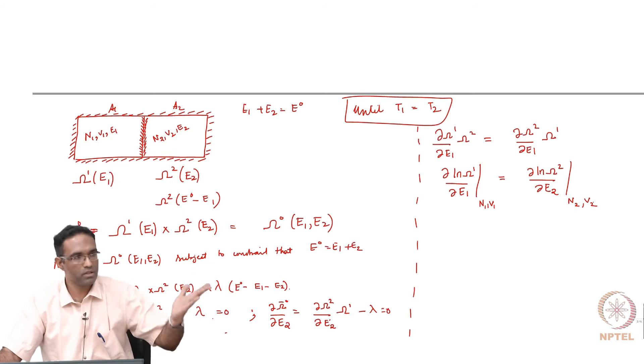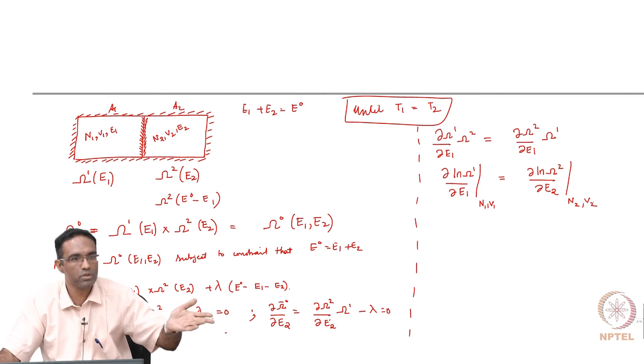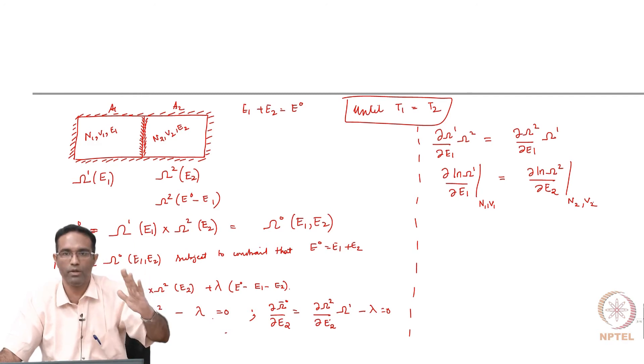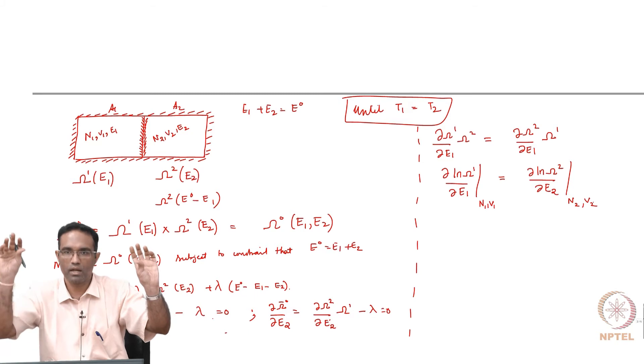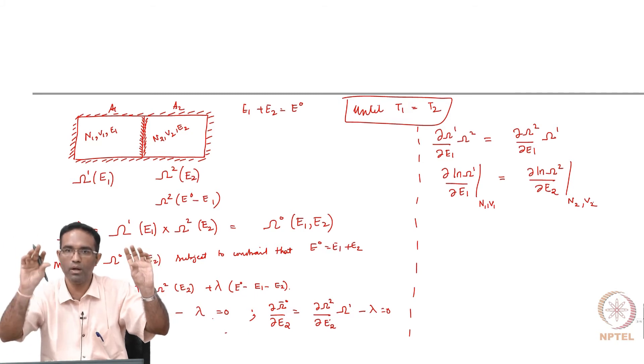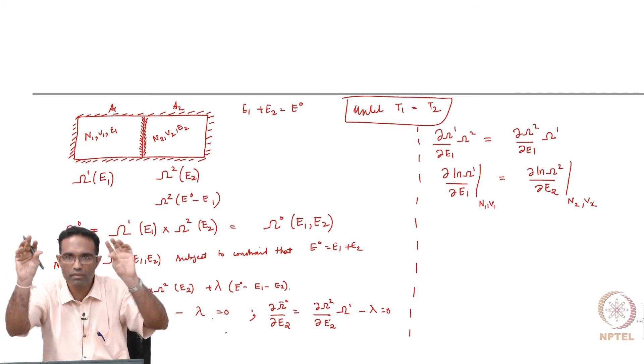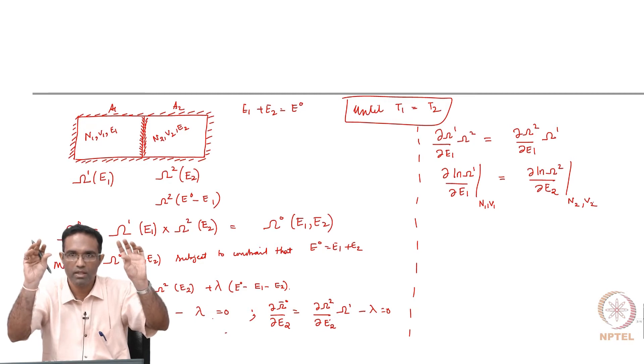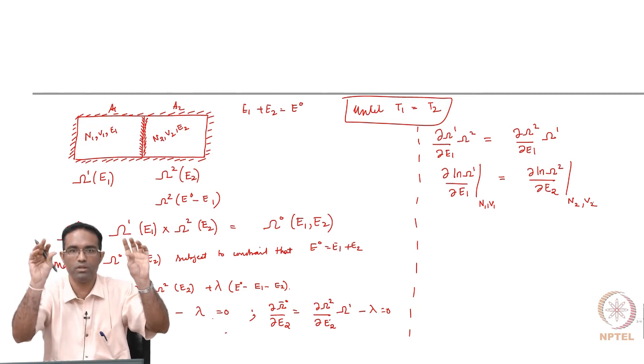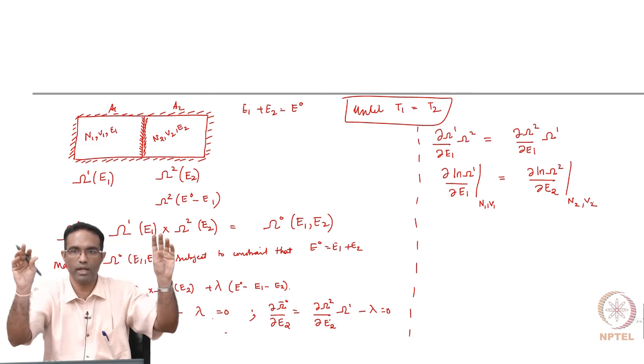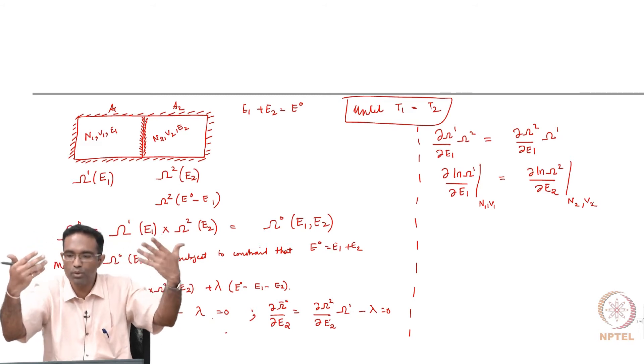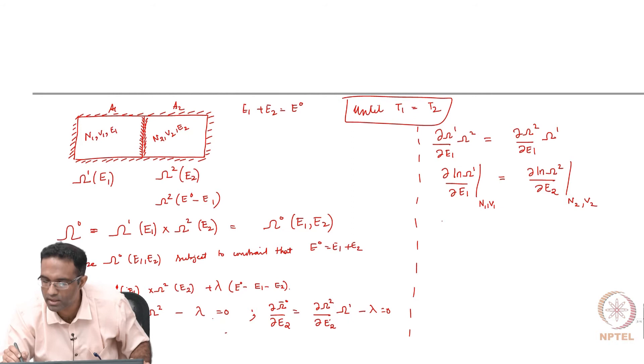We made an assertion without proof - we said that the energy exchange between the two systems will take place until this is a maximum value. Once it has reached a maximum value, there will be an E1 bar and a corresponding E2 bar which is equal to E0 minus E1 bar that each of the subsystems will have. Once that E1 bar and E2 bar have been reached, then no more energy transfer will take place.